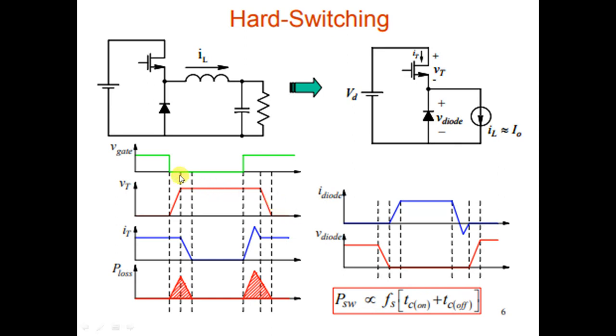Hard switching means during turn on both voltage and current are there. During turn off, also voltage and current are there. So you have turn on power loss, you also have turn off power loss.